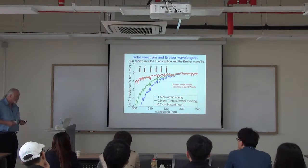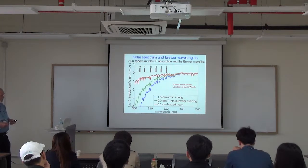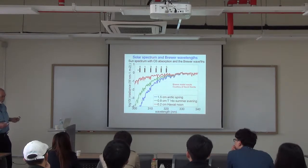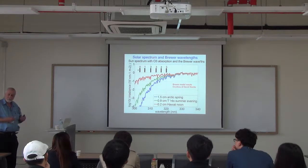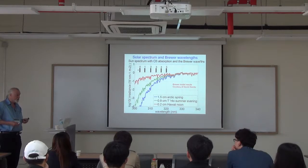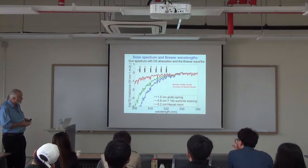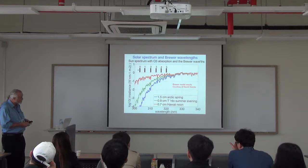The ozone cross-section itself changes roughly exponentially as a function of shorter wavelength. And the intensity is the exponential of that, so it changes extremely fast.